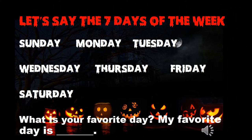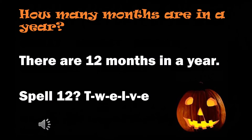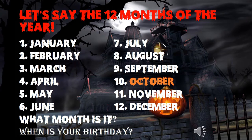Then ask 'what is your favorite day?' You can prompt them by saying 'my favorite day is Sunday.' Slide 6: ask how many months are in a year — they should say 'there are 12 months in a year.' Then ask them to spell 12 — they should say T-W-E-L-V-E.